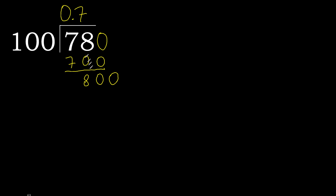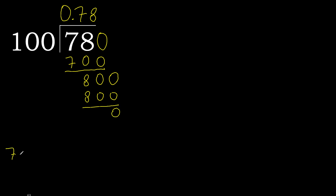100 multiplied by 8 is 800. It is not greater. Subtract: 0. 0, therefore finish it. 78 divided by 100 equals 0.78.